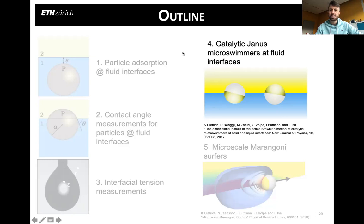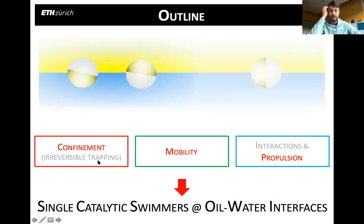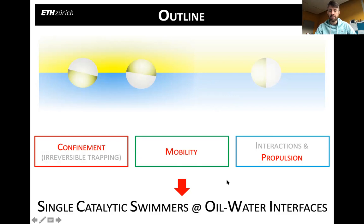The first case I want to discuss is catalytic Janus microswimmers at fluid interfaces. The presence of the interface affects many properties of these particles. First, the particles are confined within the interface plane. In particular, the concept of contact line pinning I described before is very important. The particles are mobile and can swim within the interface plane based on the same catalytic mechanism described for bulk. The interface also affects propulsion, especially coupled to the orientation of the particles. We focus on the behavior of single catalytic swimmers at oil-water interfaces.